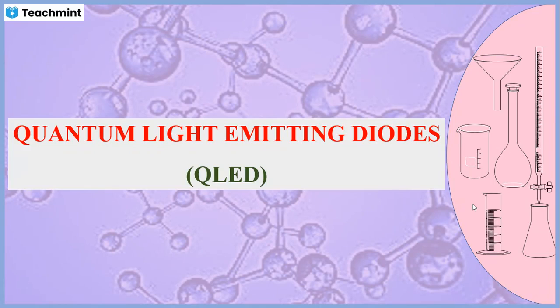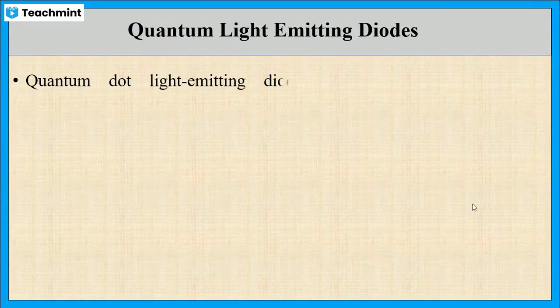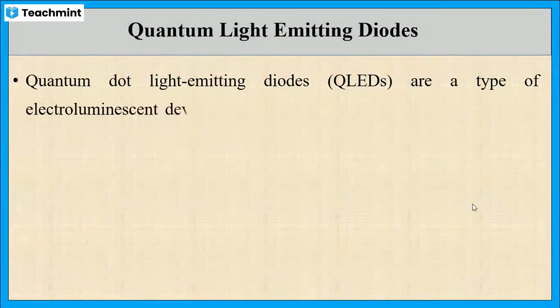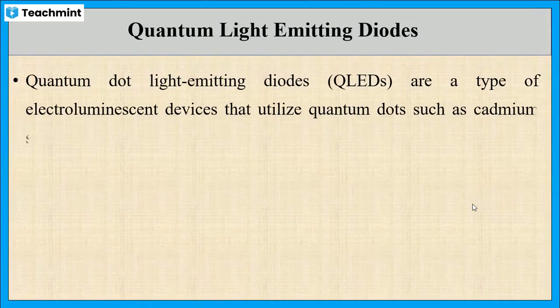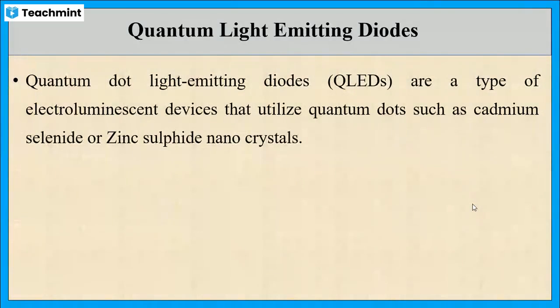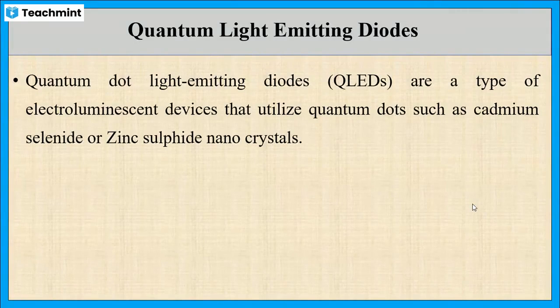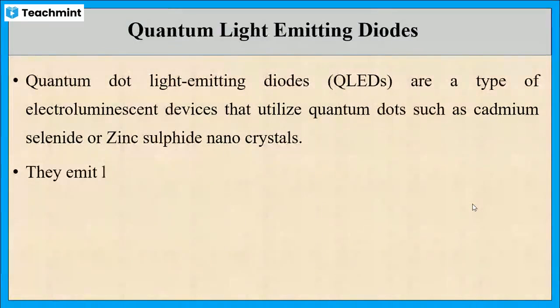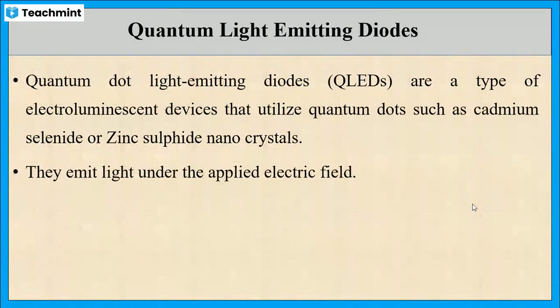In this session, let us discuss about quantum light-emitting diodes, i.e. QLED. These are a type of electroluminescent devices which utilize quantum dots, such as cadmium selenide or zinc sulfide nanocrystals. By the application of electric fields, they will emit light.